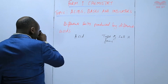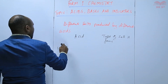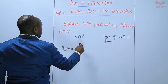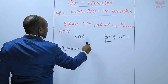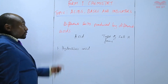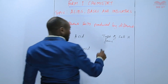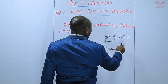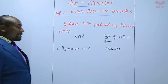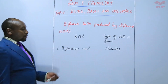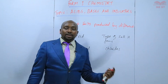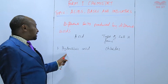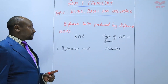For example, if it is hydrochloric acid, then the type of salt that it forms is chlorides. So sodium chloride, magnesium chloride, and calcium chloride are all obtained from hydrochloric acid.